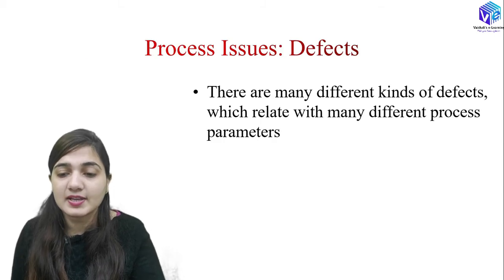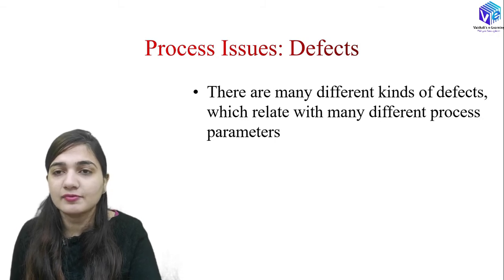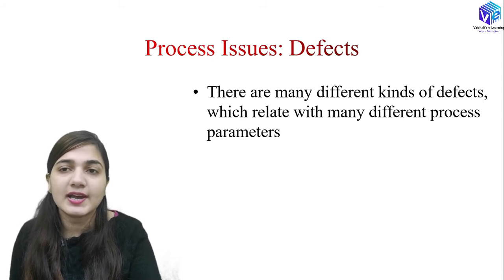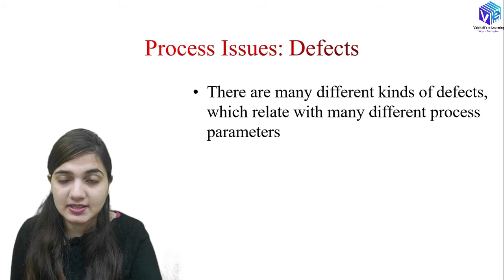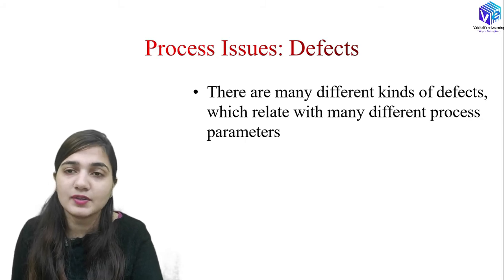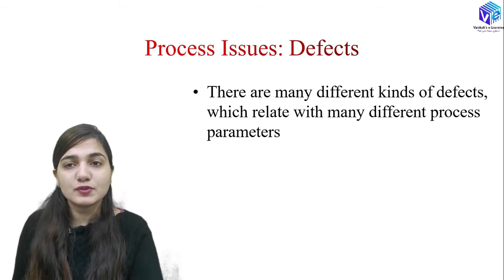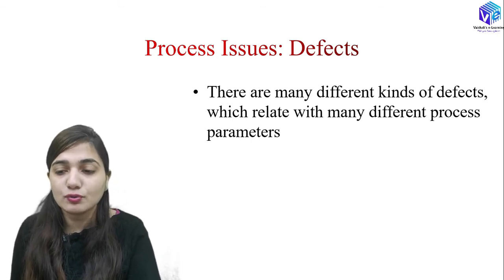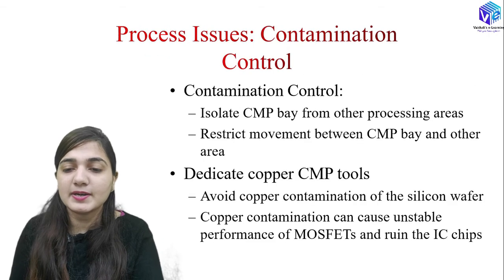There are many different kinds of defects in CMP — generated due to slurry, scratches, and other sources. To control defects, we need to carefully select the hardness of the polishing pad, the kind of slurry used, and the type of post-CMP cleaning performed. Defect control is a very important concern and relates to many different process parameters.